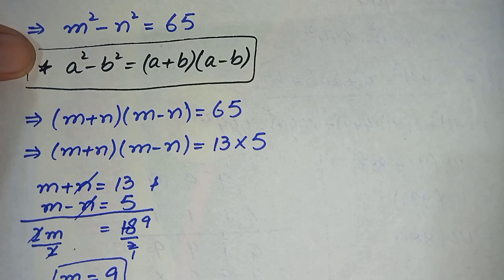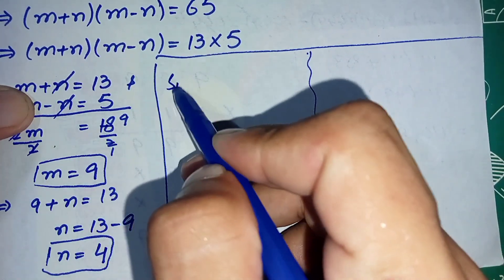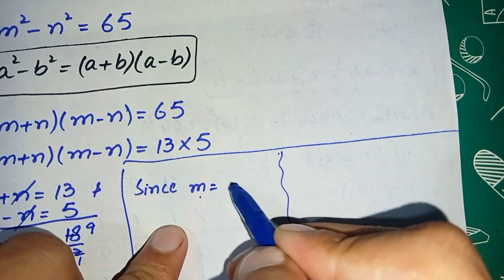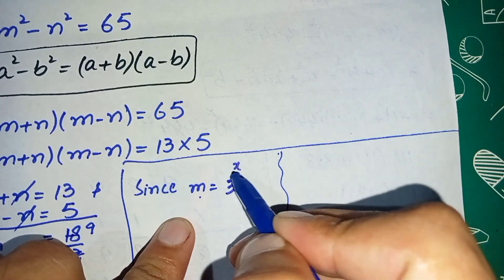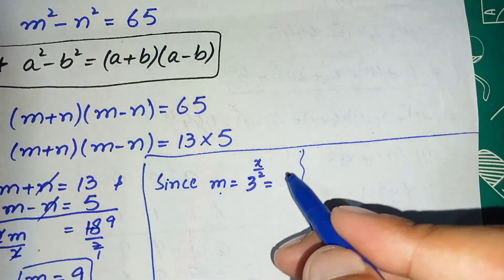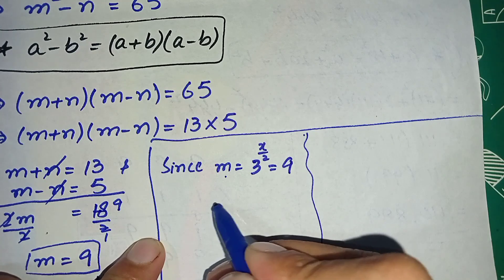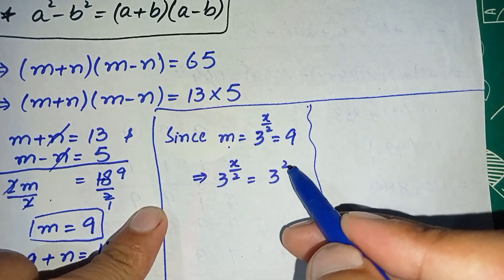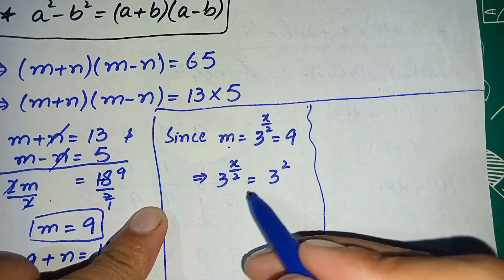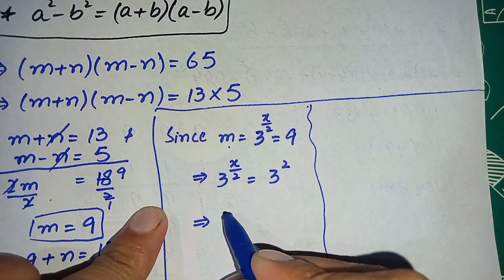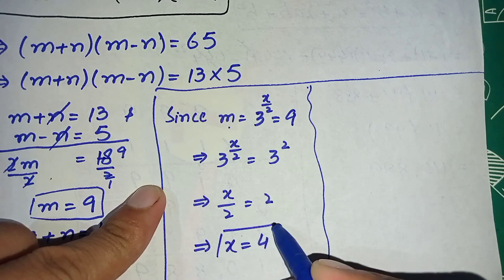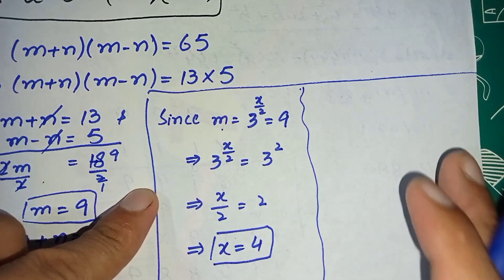Now we substitute m and n back. Since m equals 3 raised to power x/2, we write: 3 raised to power x/2 equals 9. Simplifying, 3 raised to power x/2 equals 3 raised to power 2. Since the bases are the same on both sides, we compare the powers: x/2 equals 2, so x equals 4.